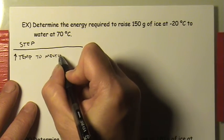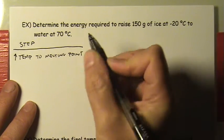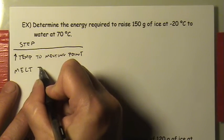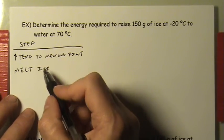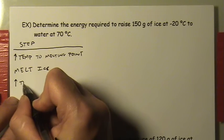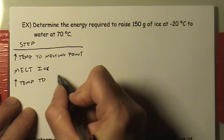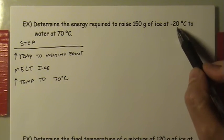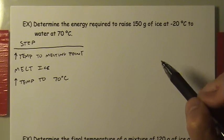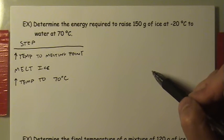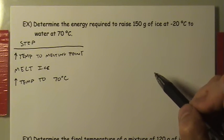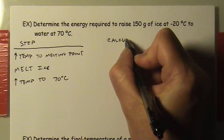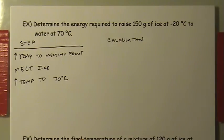There are three steps: first, increase the temperature of the ice to the melting point at 0°C; second, melt the ice; third, increase the temperature of the water from 0°C up to 70°C. There will be three separate calculations corresponding to these three steps.